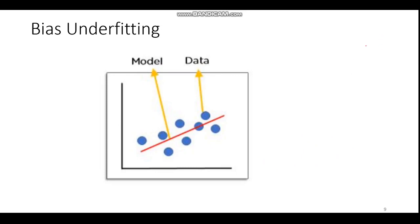High bias results in underfitting. In this case, we can see the best fit line or decision boundary, but the model has predicted values that are nowhere close to the actual data points — that is the underfitting problem.